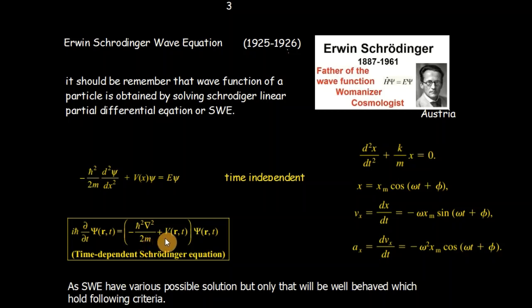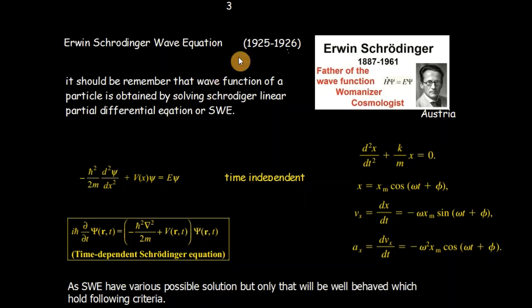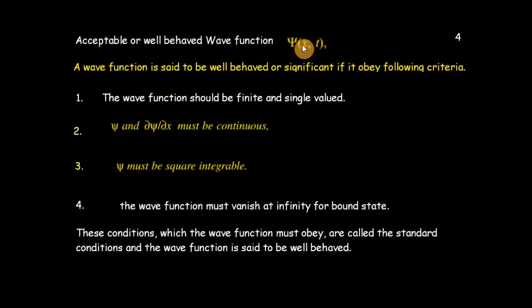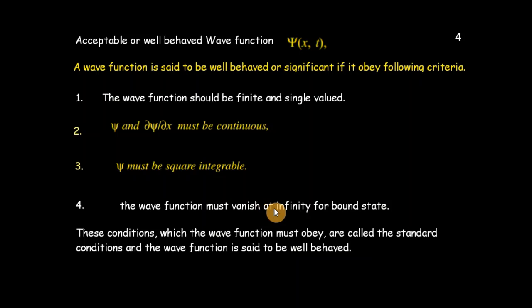When we solve the Schrödinger equation we get various wave functions, because differential equations have multiple solutions. Among these various wave functions, how do we select the meaningful and informative one? Schrödinger stated that among all wave functions, only those that satisfy four criteria are fruitful. These criteria are: the wave function must be finite, single-valued, its derivative must be continuous, and it must be square integrable. Also, the wave function must vanish at infinity.